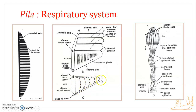The ctenidial axis is traversed by an afferent blood vessel. The afferent blood vessel carries deoxygenated blood into the gill for oxygenation. The oxygenated blood is then collected through the efferent blood vessel, which takes the blood from the gills to the heart, so that it can be pumped to various parts of the body.